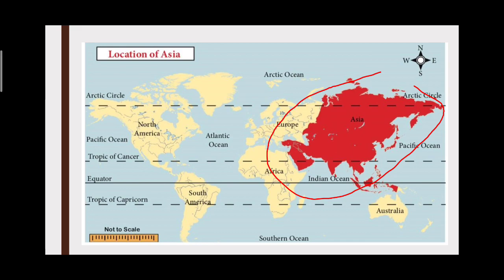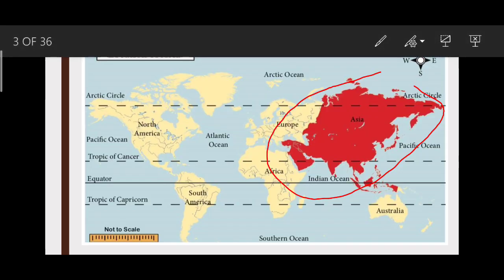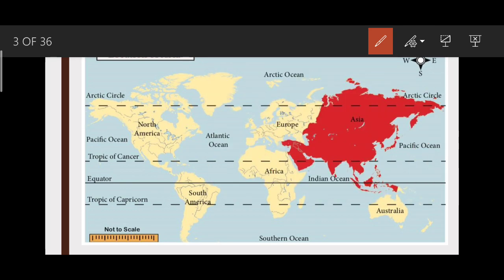We will check Asia's boundaries. To the north is the Arctic Ocean, to the east is the Pacific Ocean, and to the south is the Indian Ocean. The Suez Canal separates Asia from Africa. The Bering Strait is another important boundary. These are the key boundaries of Asia.